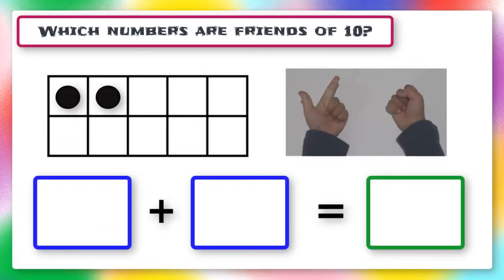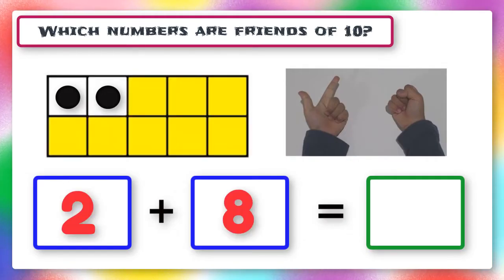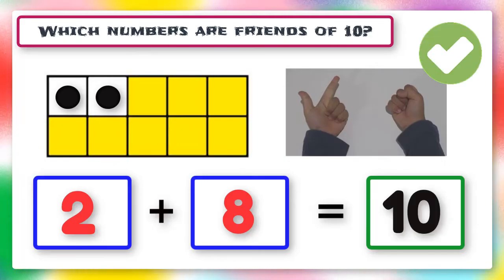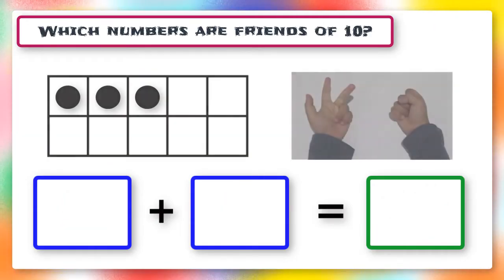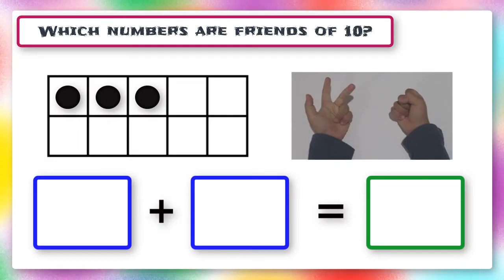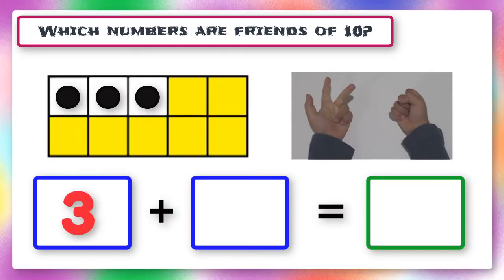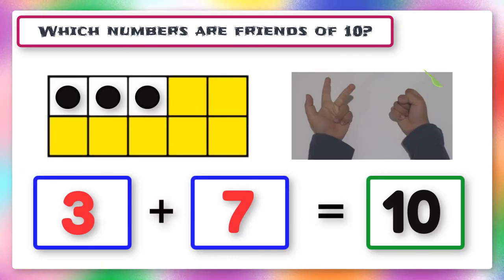Let's take a look at this 10 frame. 2 and what are friends of 10? 2 and 8 are friends of 10. Good work! Let's keep going. 3 and what are friends of 10? 3 and 7 are friends of 10. Excellent!